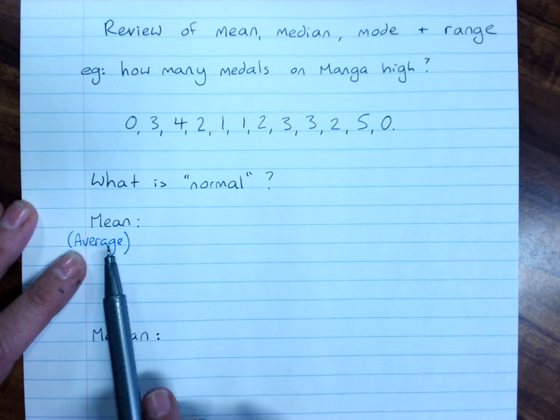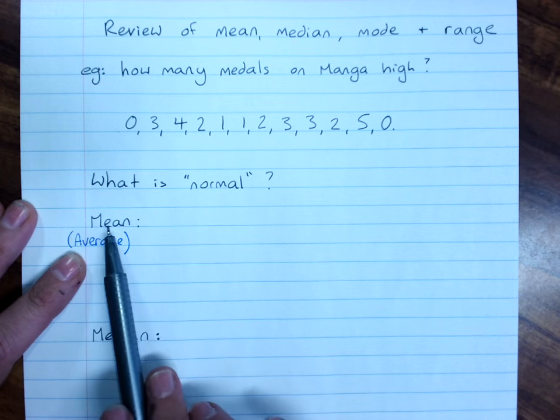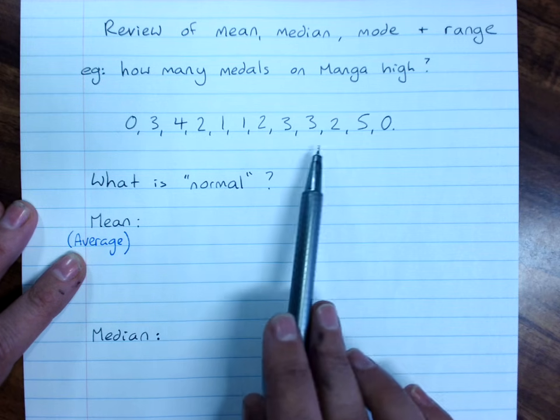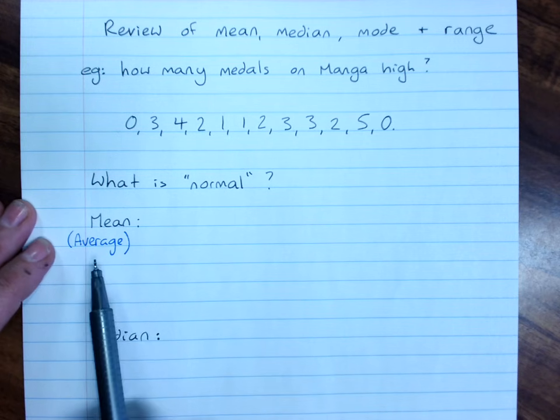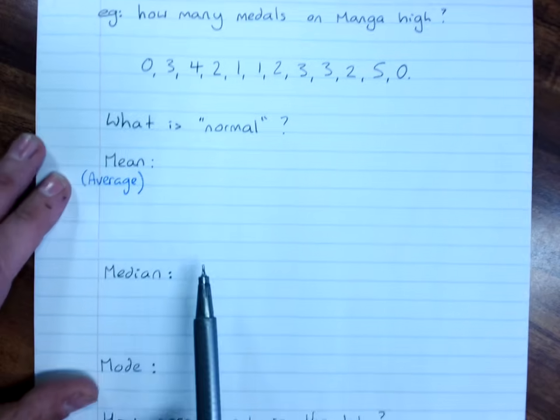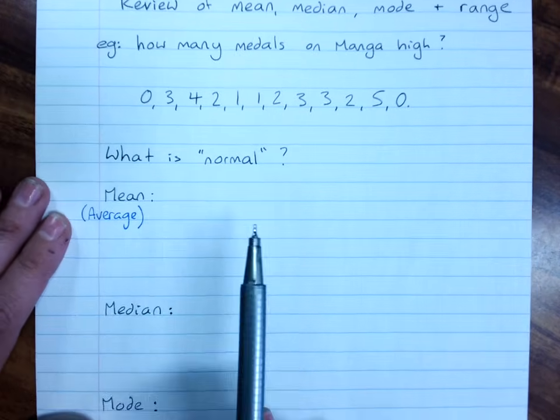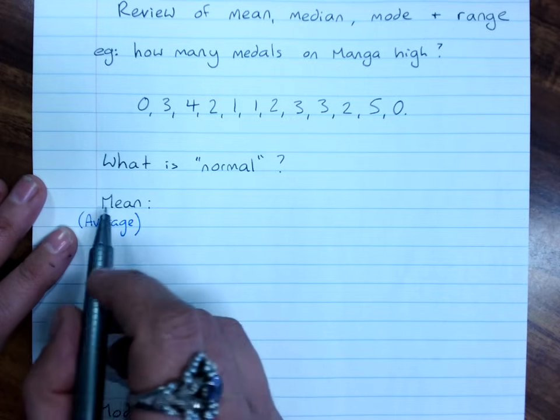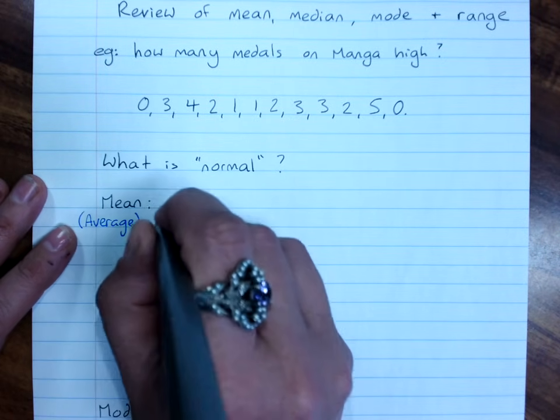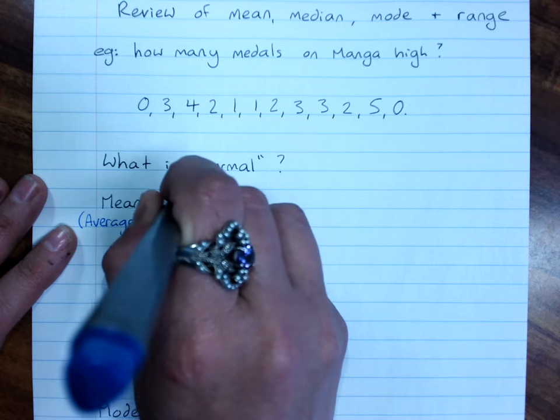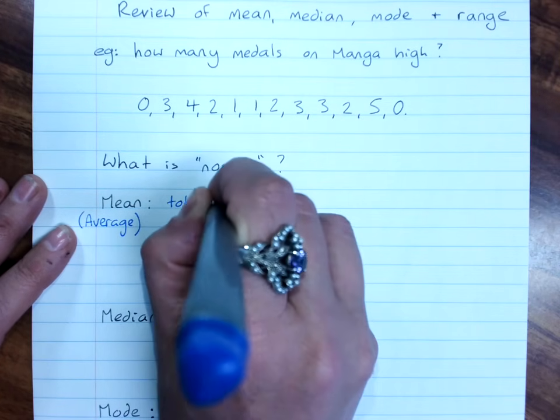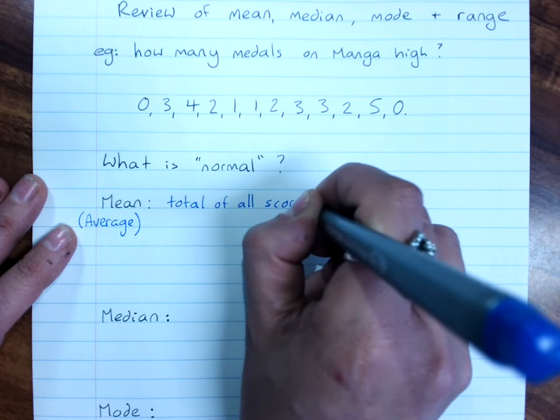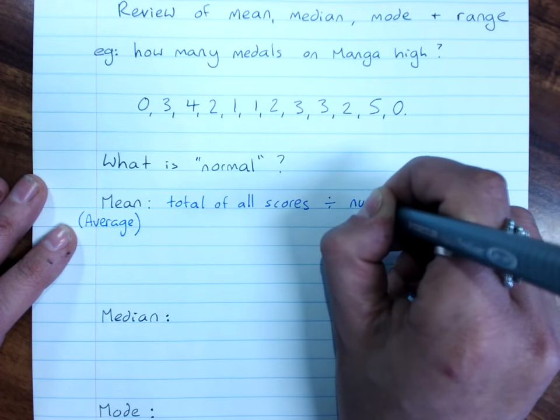And so the mean is saying exactly what we want to do is add all the scores up and divide by how many there are. Whereas sometimes people use average to mean any one of these, and so it can get a little bit confusing. So mean is the total of all the scores divided by the number of scores.